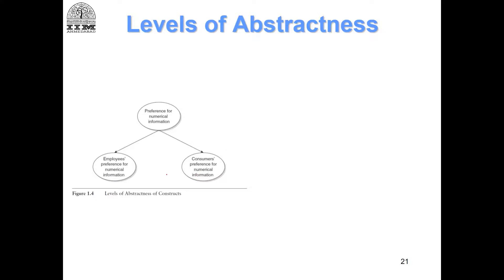Now, what it means is... this figure is only showing us that consumers' preference and employees' preference... this is more specific... this is more specific... and therefore, this is less abstract because now you are contextualizing in a very specific context. This is for employees and this is for consumers. But if you talk about your construct as a preference for numerical information, that can be valid for both employees as well as consumers.